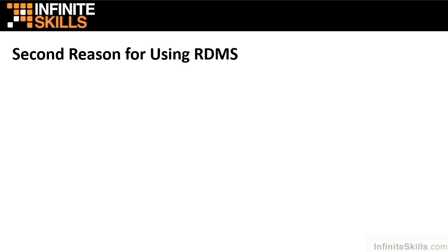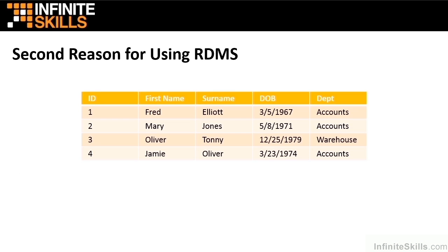That's reason one for having multiple tables. Now there is a second reason, equally as valid as the first. Take our sample data again — we've got the parent's date of birth and the department that they belong to. This time it's not an issue of restructuring or querying empty columns. Here we have a lot of repetition. The department column, for example, has the word 'accounts' three times. That is repetition of data.